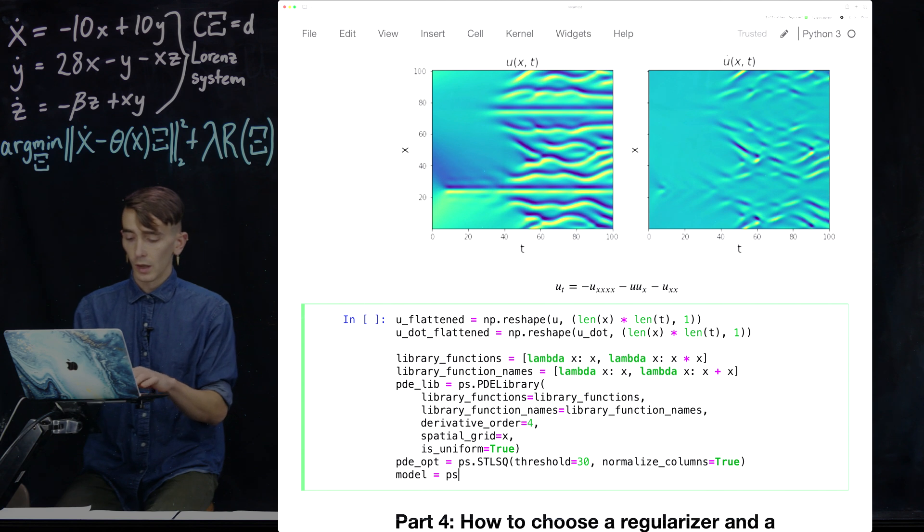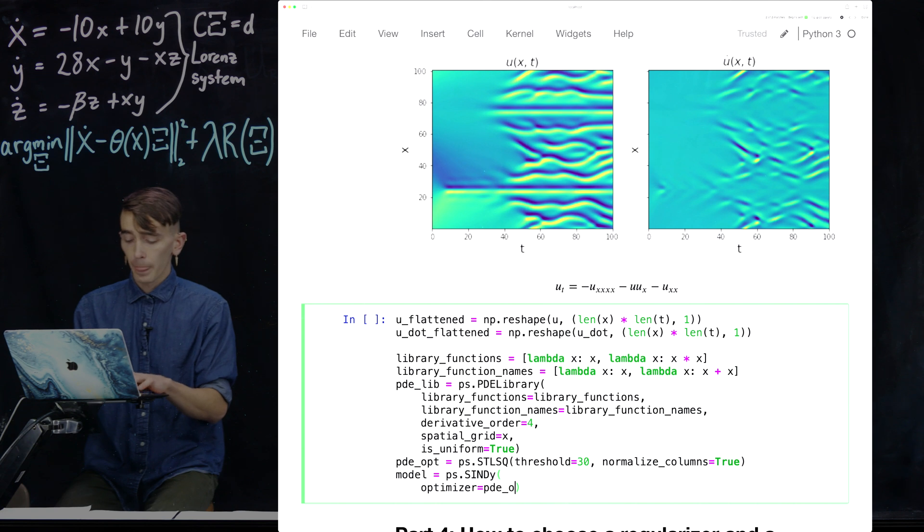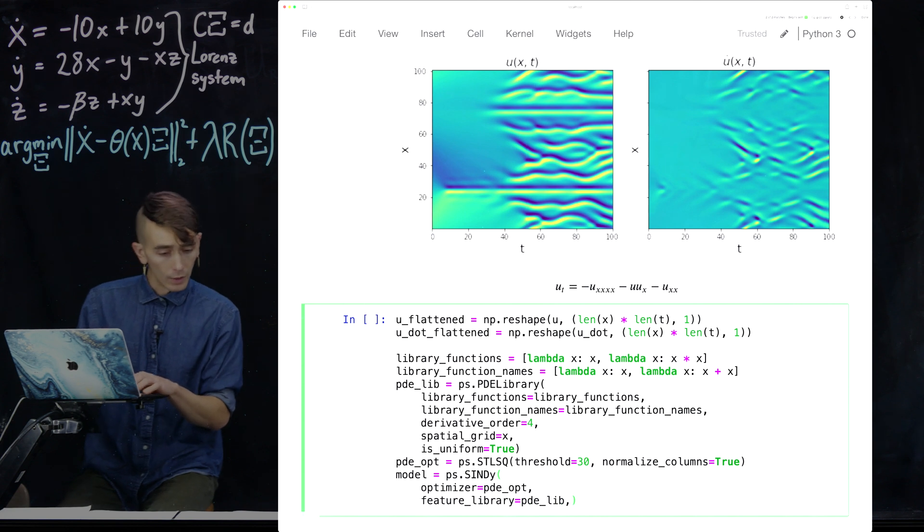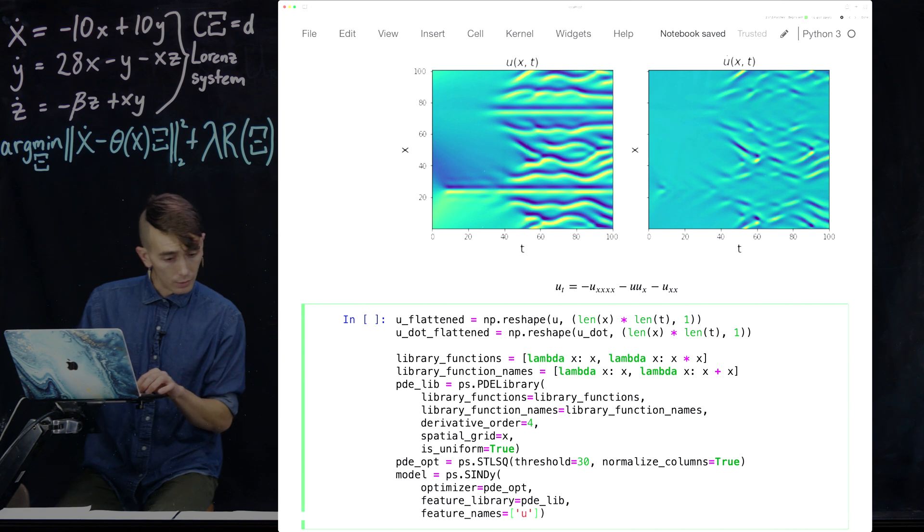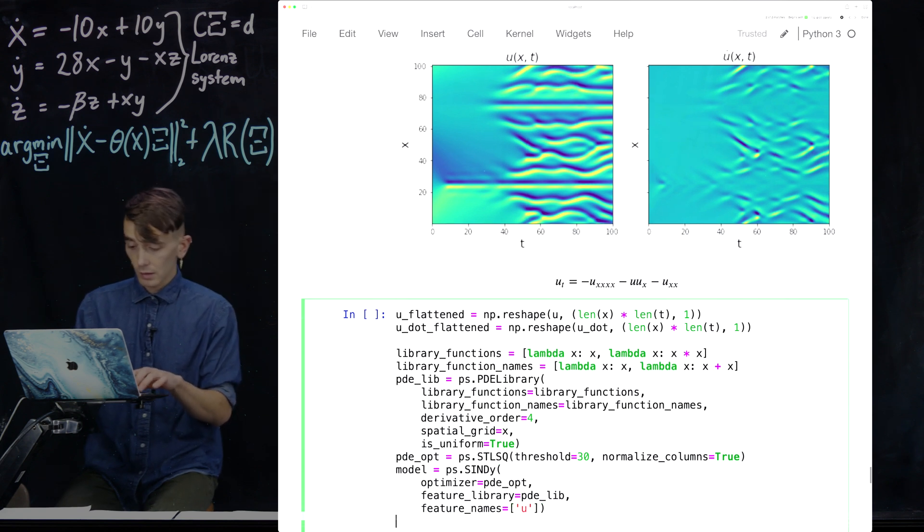So that's our optimizer. And then we do our normal thing. PySINDy model. Pass the optimizer. Pass the feature library. PySINDy model. And I guess I called the feature names u here. And I think that's it.